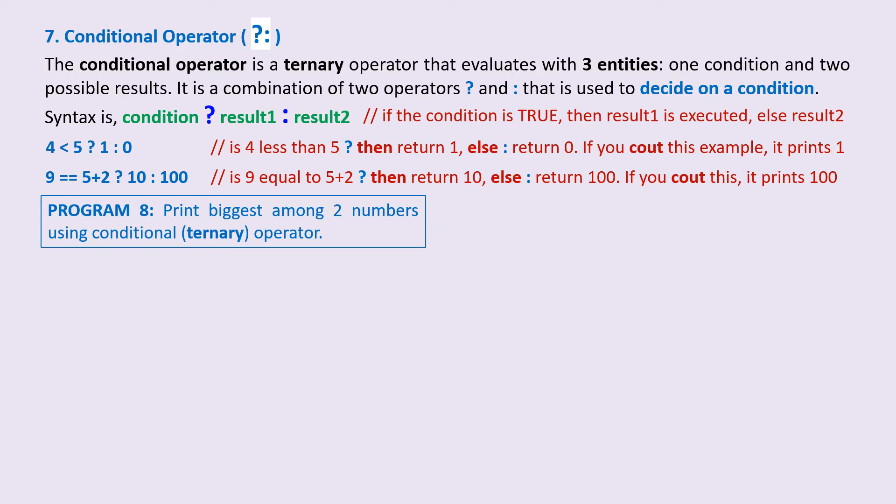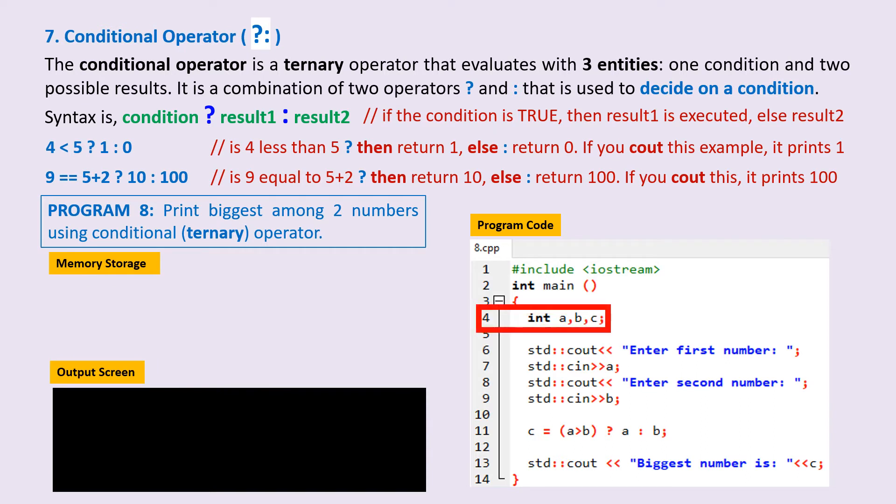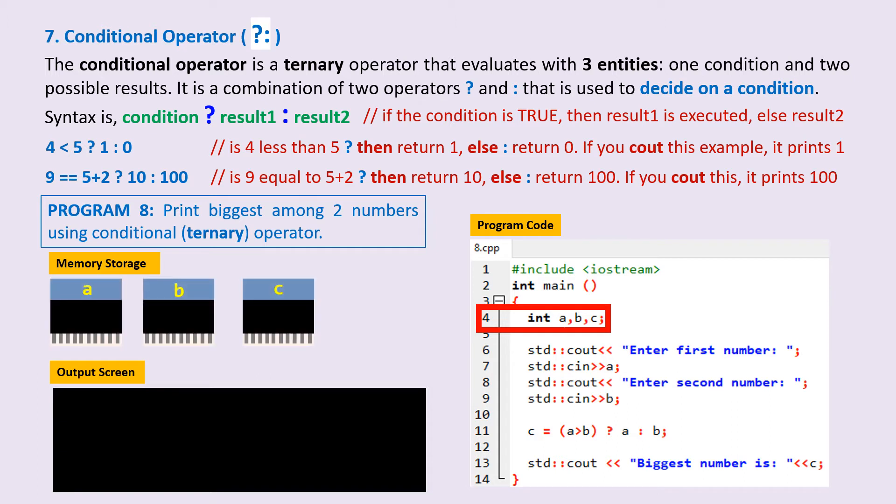Here is the program code. I have saved it as 8.cpp. On line 4, we declare three integer variables a, b, and c. Physically, this creates memory storage locations for a, b, and c.